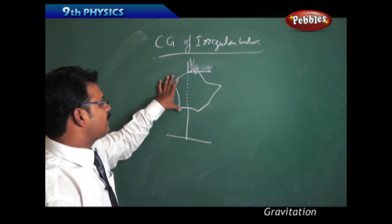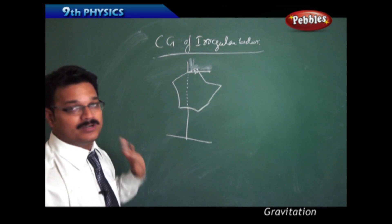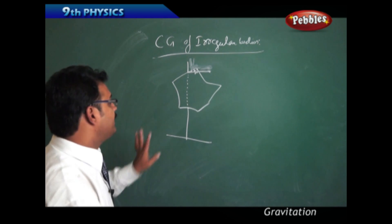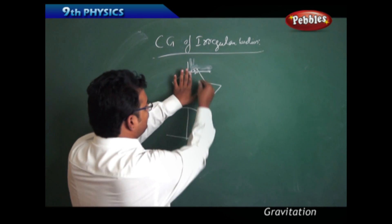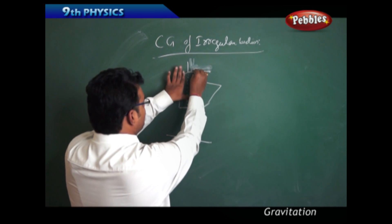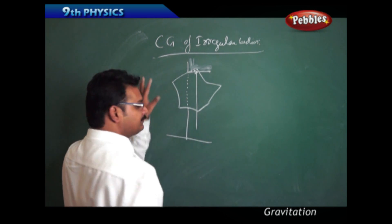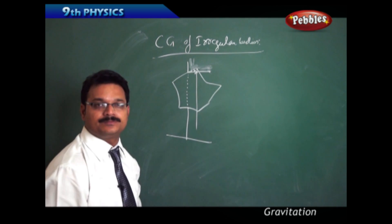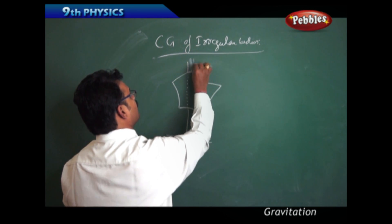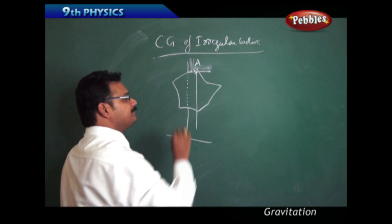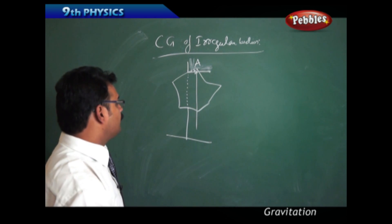When this planar surface is stable, take a scale and draw a straight line from this point. Call this line A.